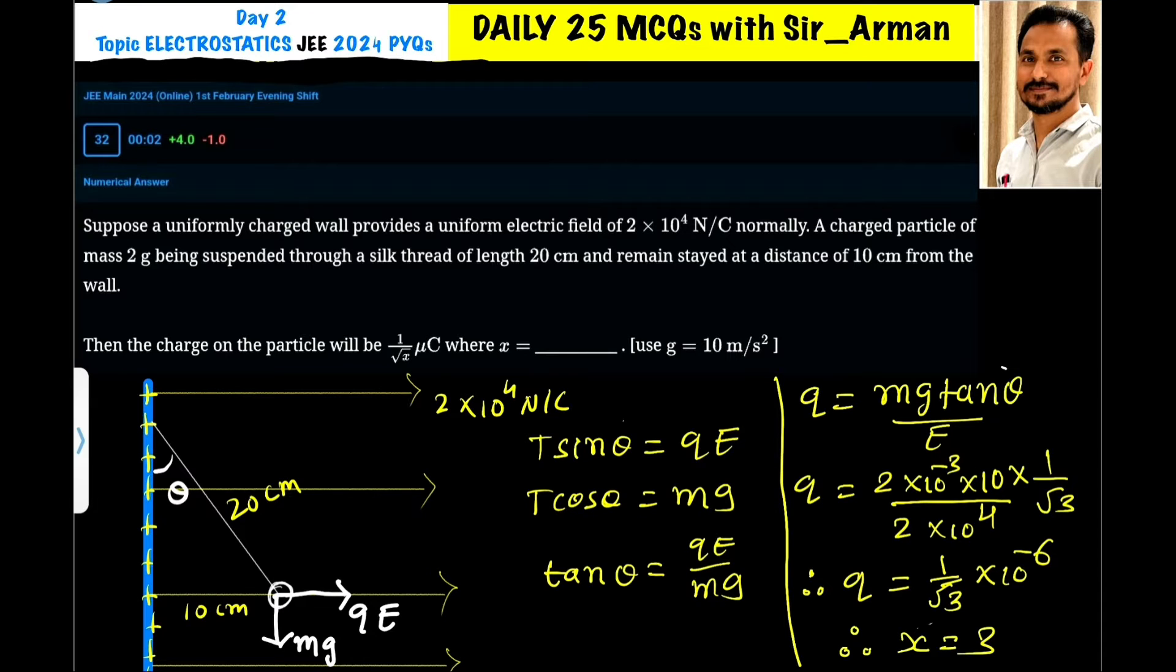Suppose a uniformly charged wall provides a uniform electric field of 2×10⁴ N/C normally. Here we have a wall - it's actually a two-dimensional wall, but I have shown it in one dimension. A charged particle of mass 2 grams is suspended through a silk thread of length 20 centimeters.